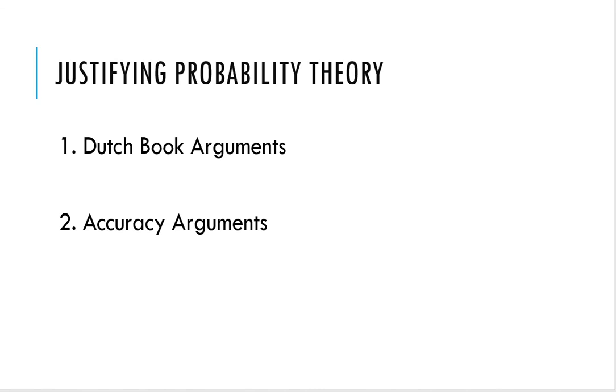There are a number of approaches that philosophers have taken to justify probability theory, and we're just going to examine two of the most prominent ones. In this video, we'll look at Dutch book arguments, and then in a video for Friday, we'll look at accuracy arguments. These are two different approaches to justifying probability theory.